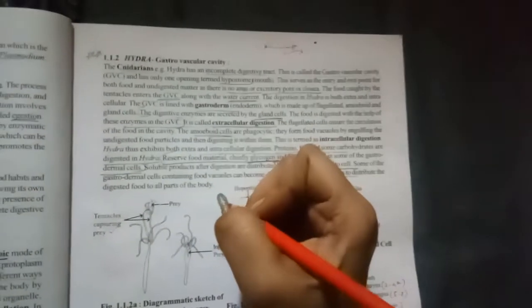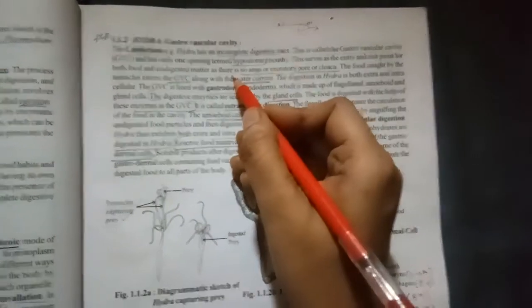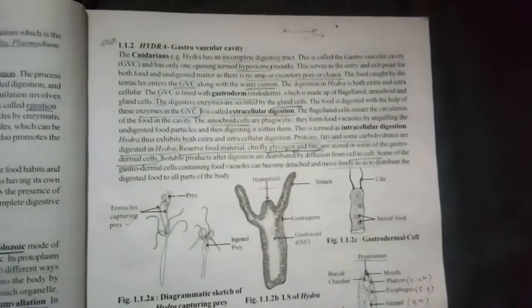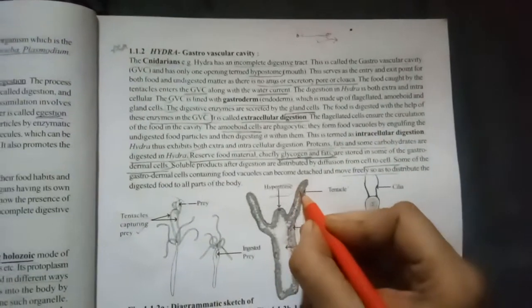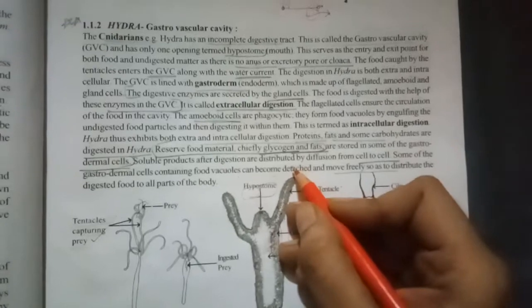It is a gastro vascular cavity. Hydra belongs to phylum Cnidaria. They have incomplete digestive tract. Incomplete digestive tract means they have only one opening which is called as hypostome through which they eat and also excrete.